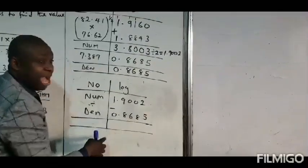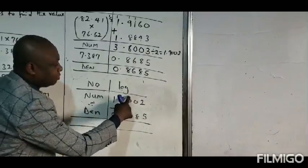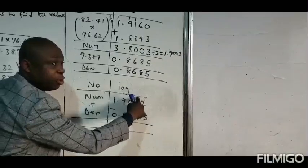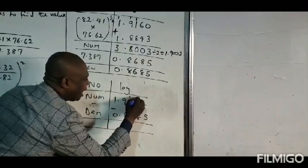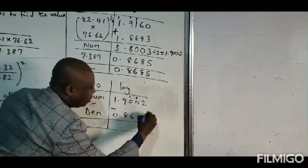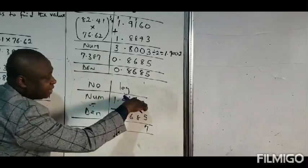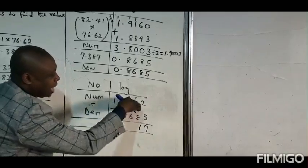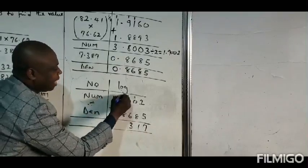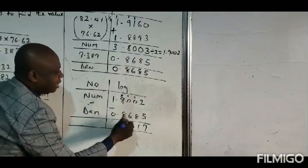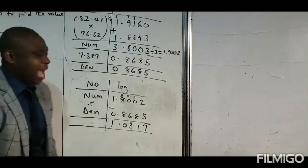At this point we subtract. Two cannot subtract five, so we have to borrow all the way from 9. Borrowing gives us 10; borrow again gives 12. All remaining digits become 9. So: 12 minus 5 is 7; 9 minus 8 is 1; 9 minus 3 is... we have 9 left, giving 3. We borrowed from the next digit, so it becomes 8, and 8 minus 8 is 0; 1 minus 0 is 1. So the result is 1.0317.